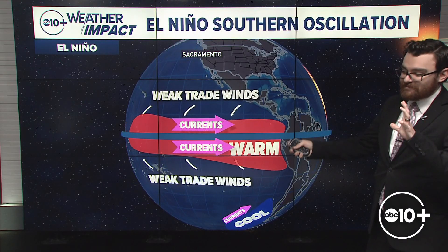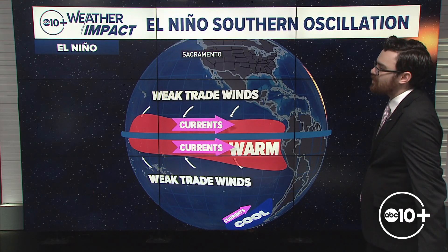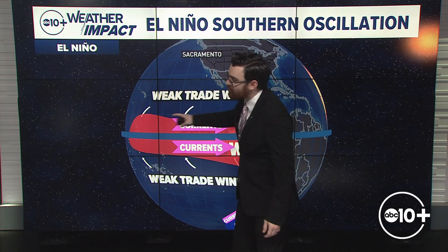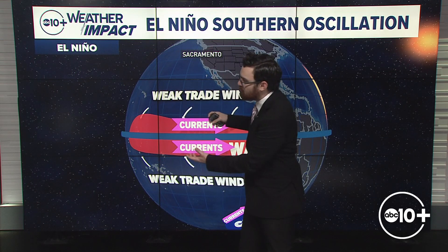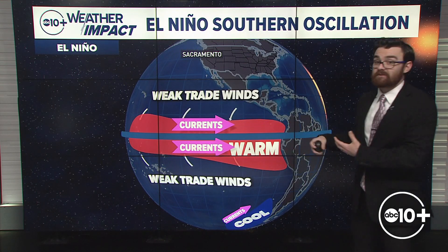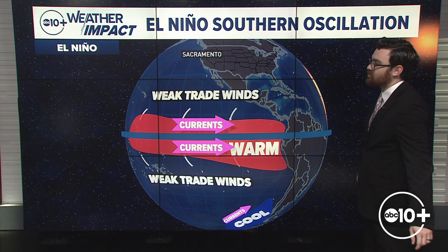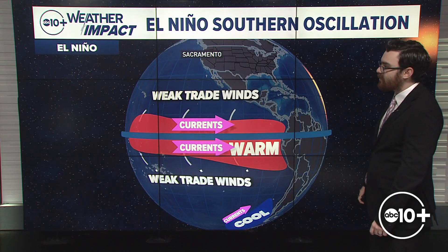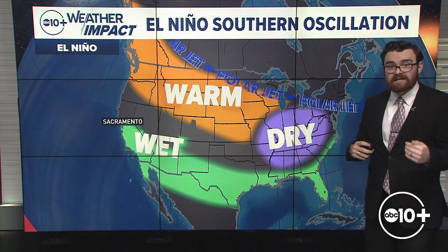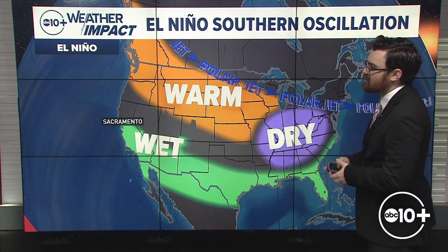Now we're going to talk about the flip-flops — El Niño and La Niña, starting with El Niño. We've got weaker trade winds and weaker currents, and in fact the currents even start to push backwards a little bit, directing warmer water out across the equatorial Pacific all the way to the coast of South America. This does have an impact on the type of weather we typically see in North America when we have El Niño conditions.